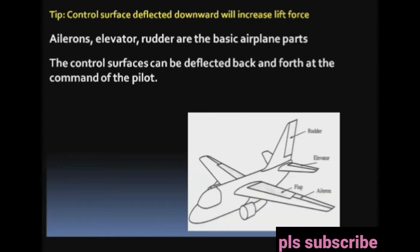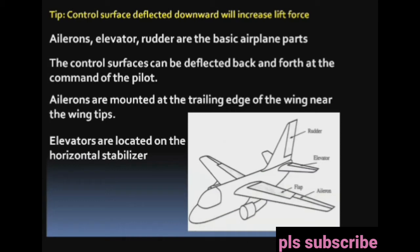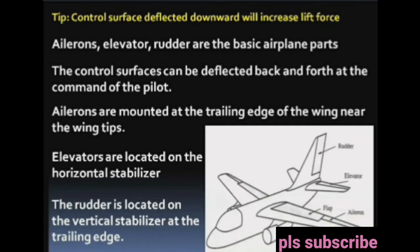The control surfaces can be deflected back and forth at the command of the pilot. Ailerons are mounted at the trailing edge of the wing near the wingtips. Elevators are located on the horizontal stabilizer. The rudder is located on the vertical stabilizer at the trailing edge.